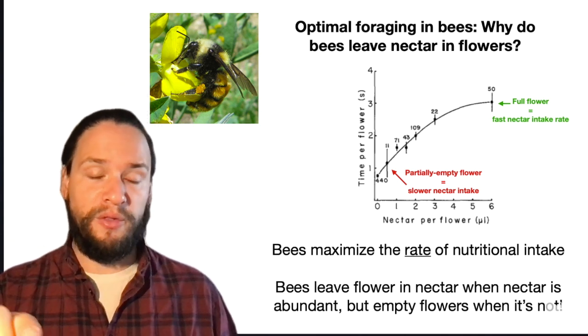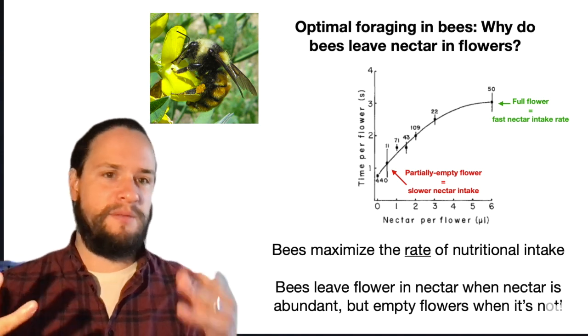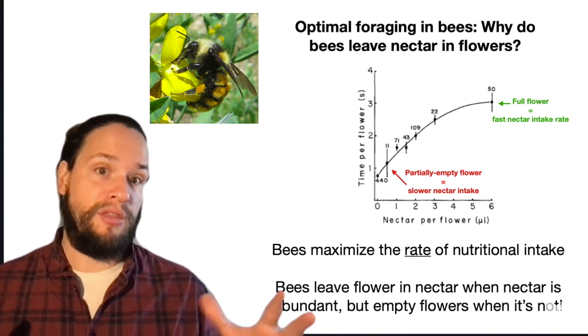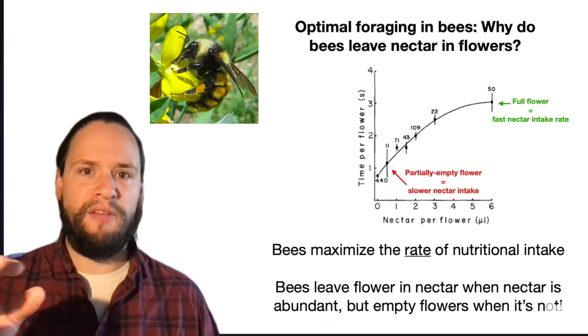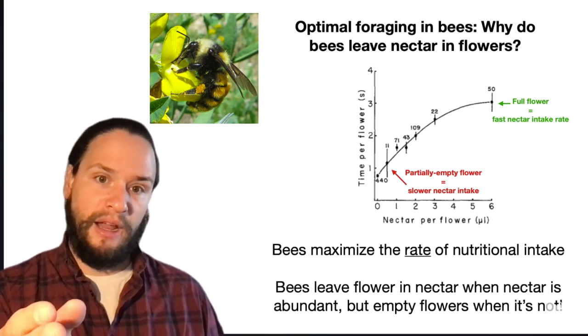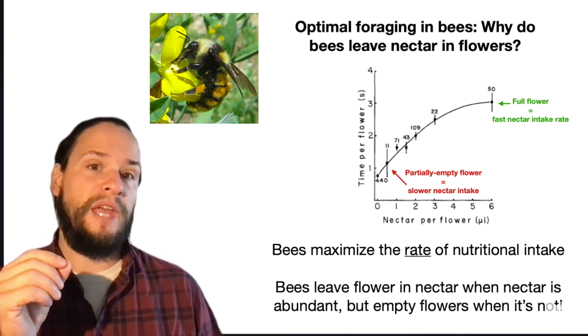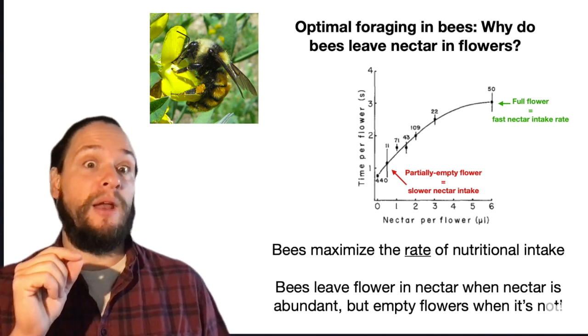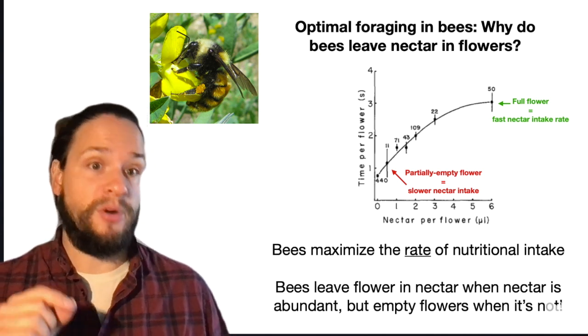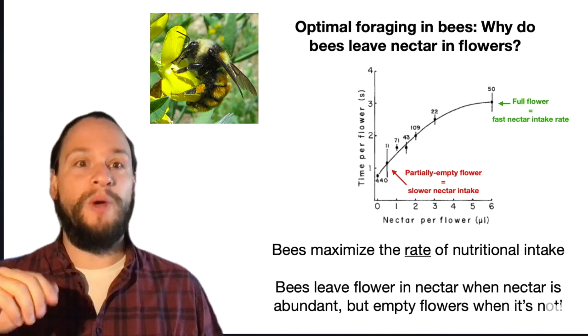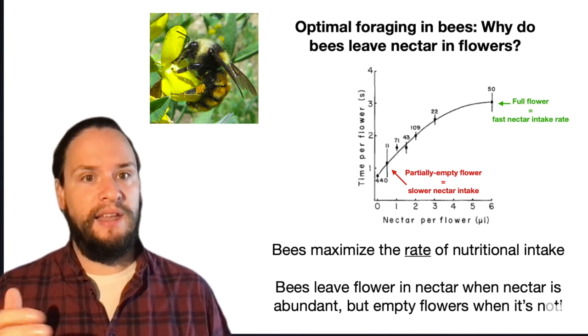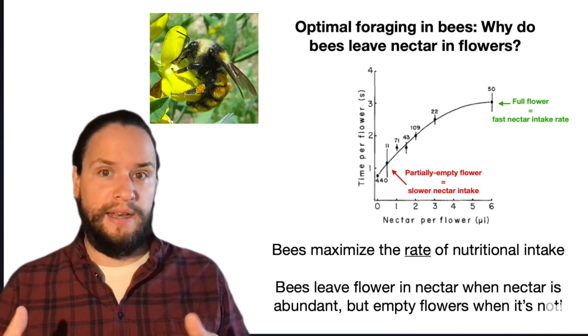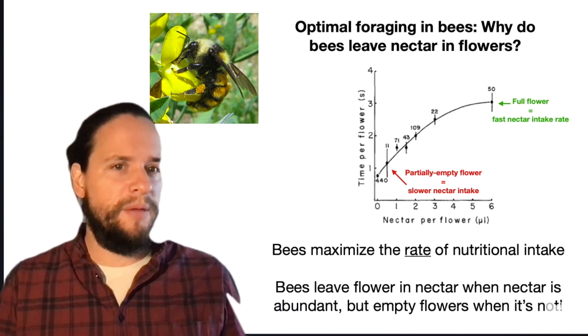notice or noted kind of a full flower, you're getting about six microliters in three seconds, right, from that full flower. But on the other end on the left, a flower that only has, say, one microliter in it, that takes a second. So you're getting one microliter of nectar per second on that flower. So your rate of intake is faster when flowers are full. Bringing in food faster when the food vessel is more full kind of makes sense, right?